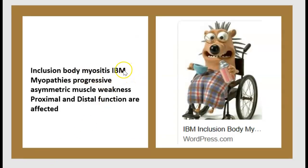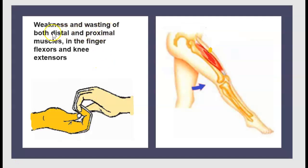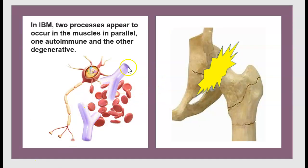Inclusion Body Myositis, or IBM, is a progressive asymmetric muscle weakness affecting both proximal and distal function. There is weakness and wasting of both distal and proximal muscles, particularly in the finger flexors and the knee extensors. Two parallel mechanisms appear to occur in IBM: the first is autoimmune, and the second is degenerative.